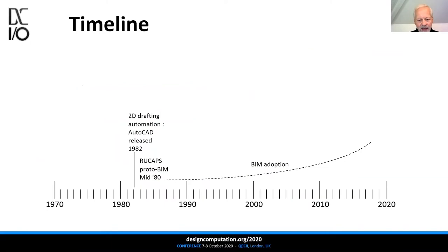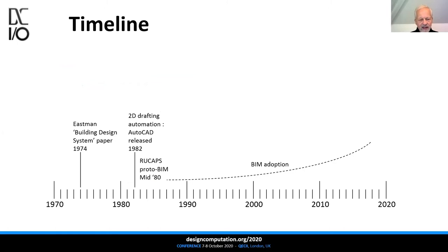Looking at the timeline, we have RU-CAPs as a proto-BIM system in the mid-1980s, coming more or less at the same time as the first release of AutoCAD 2D drafting. But nearly 10 years earlier was Chuck Eastman's paper on the Building Description System.